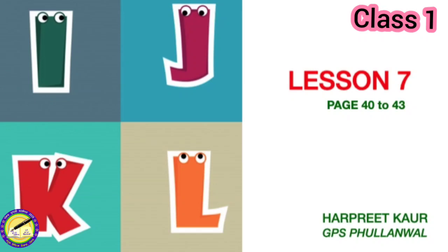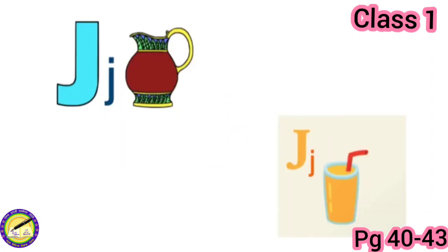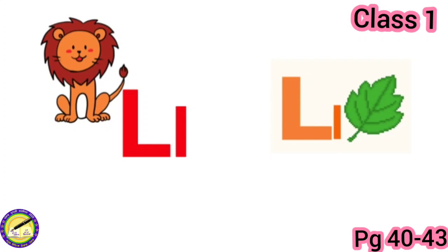Then we will do some multiple choice questions. J for jug, J for juice. Jug, juice. K for king, K for kite. King, kite. L for lion, L for leaf. Lion, leaf.